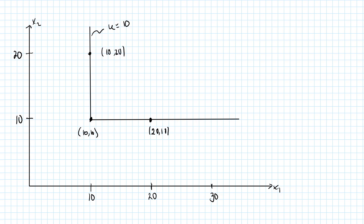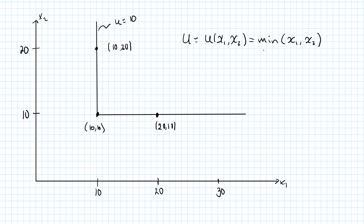The thing you may have noticed is that the smallest number in any of these bundles is always the number 10. So we can create the utility function U as a function of x1 and x2 and let it simply be equal to the minimum of x1 and x2.